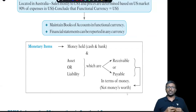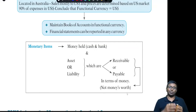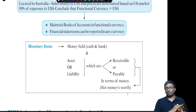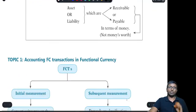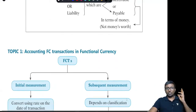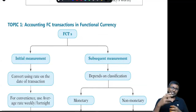For example, provision for income tax — is it fixed? It's not fixed; it may change depending upon the assessment. But it is measurable — that is called determinable. Don't give too much weight to the word 'fixed or determinable'; just focus on the concept of measurability. Now let's get into topic number one: accounting for foreign currency transactions in our currency, because foreign currency transactions are taken place by the entity. Here we have initial recognition and subsequent measurement.